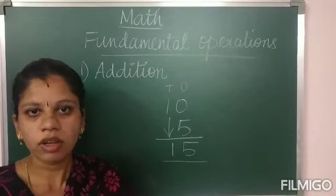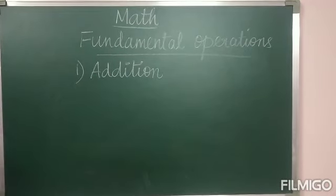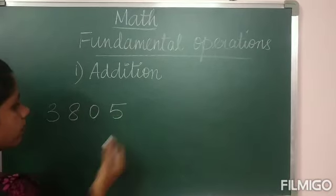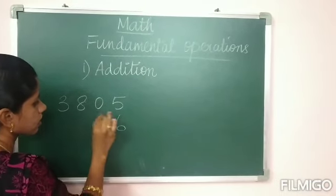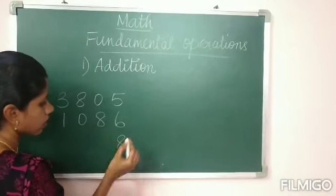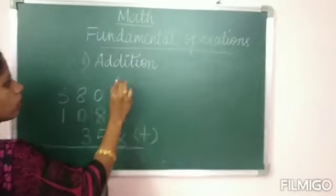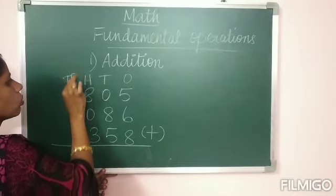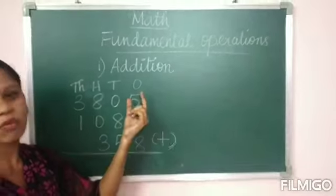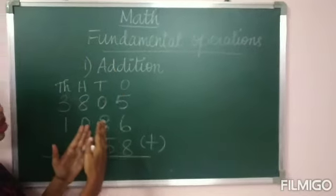Shall we go to the example? You will see addition sums now. Suppose they have given 3805, next 1086, 6801 and 358. You have to add all these things. Before that, write the place values: ones, tens, hundreds, thousands. Whenever you add, subtract or multiply, you have to start from the ones place. The ones place is the last digit of each number.